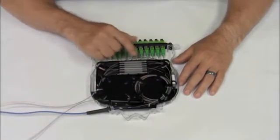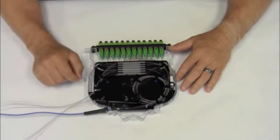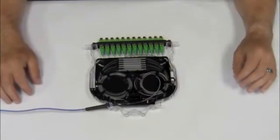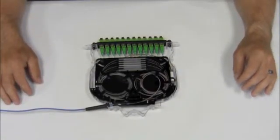Here you can see that the incoming fiber has all been slack stored. Now simply repeat on the other side. Here you can see all the fiber is properly stored in the splice tray.